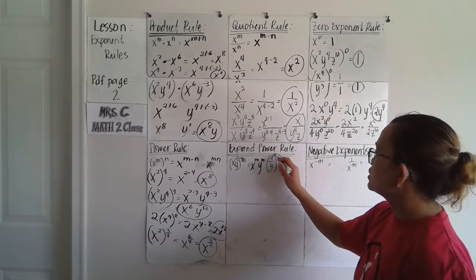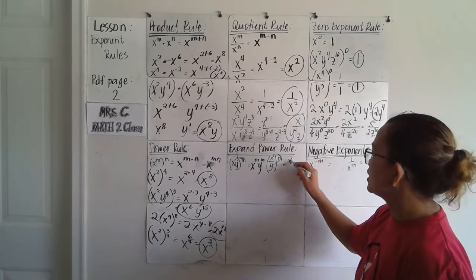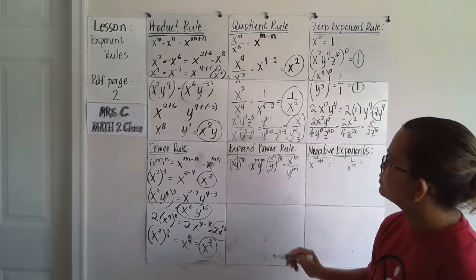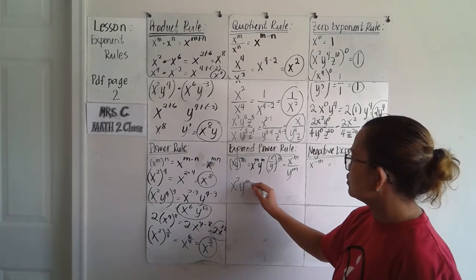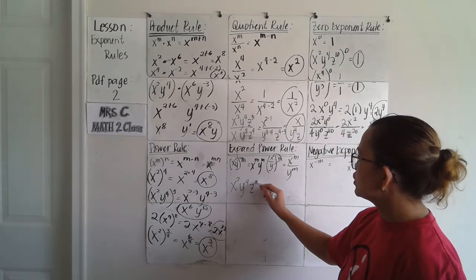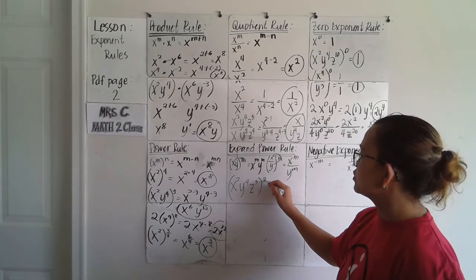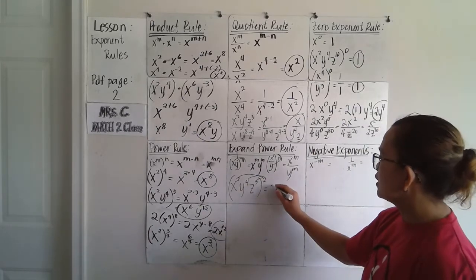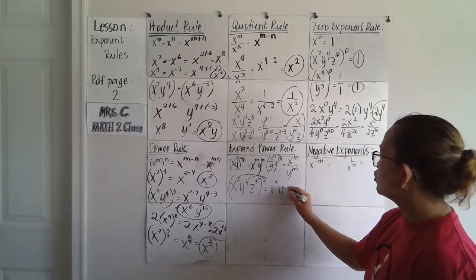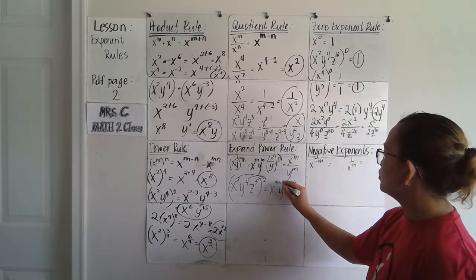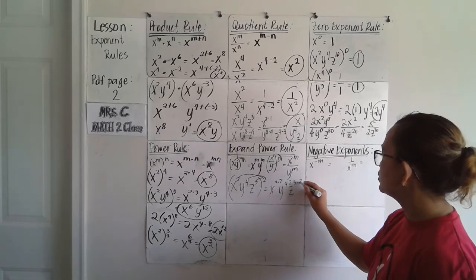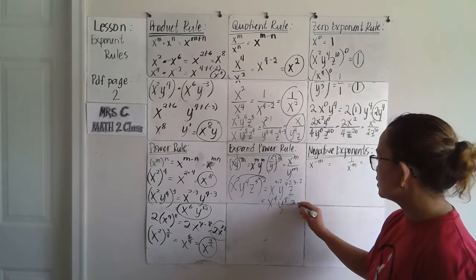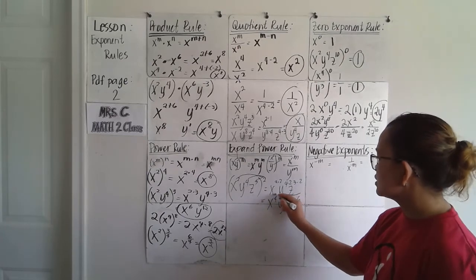For a fraction, you distribute to both numerator and denominator: x raised to m over y raised to m. Example: x squared, y to the 4th, z to the 3rd, all raised to 2. Each base receives the exponent 2 — x squared times 2, y to the 4th times 2, z cubed times 2 — giving x to the 4th, y to the 8th, z to the 6th.